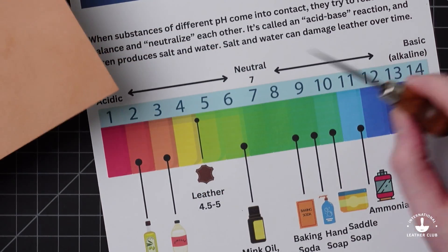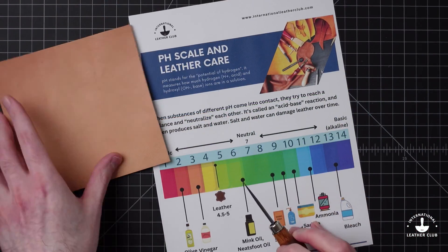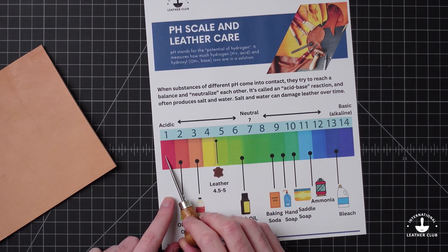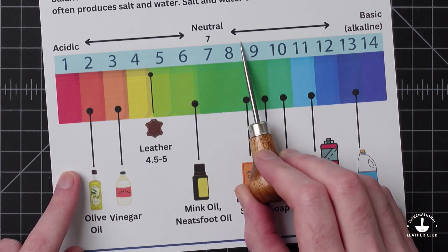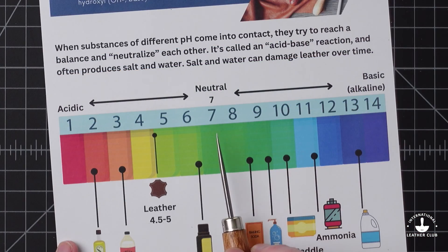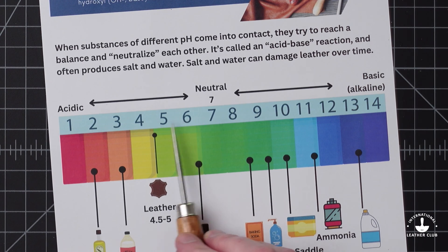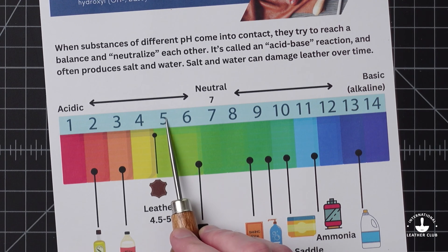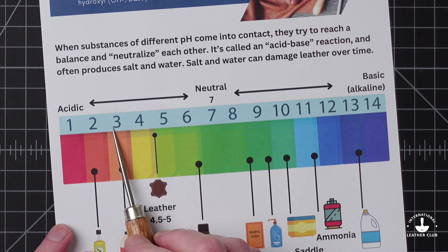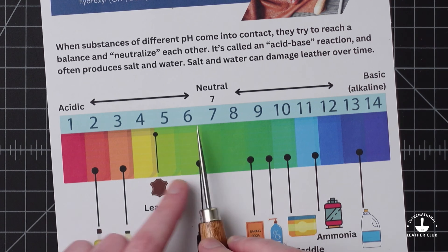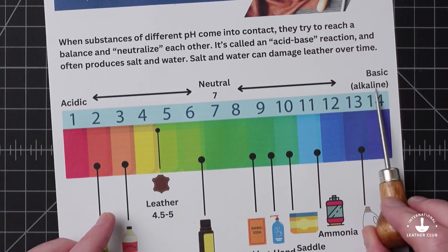We figured it would be helpful to dive into this with you and show you exactly why that matters and what choices you can make. So the pH scale: it's essentially a scale that runs from 1 to 14. Seven in the middle is neutral. Anything to the left is considered acidic and anything to the right is considered basic. This is also what's called a logarithmic scale, meaning something that is a 4 is 10 times more acidic than a 5, and a 3 is a hundred times more acidic than a 5. So the further you go, the higher the acidic or alkaline nature of that substance.